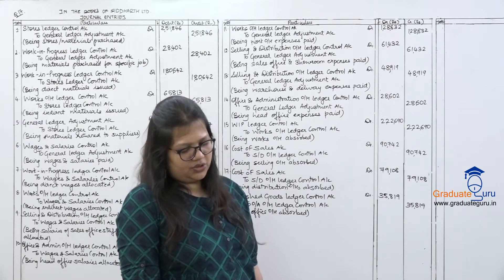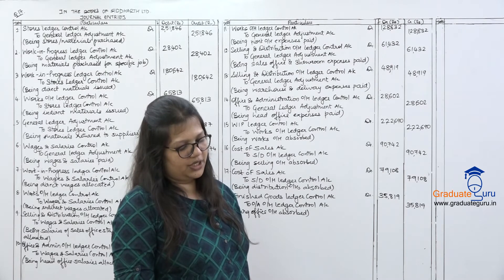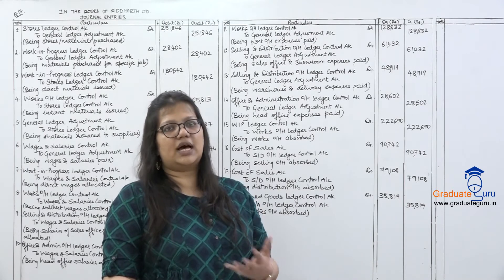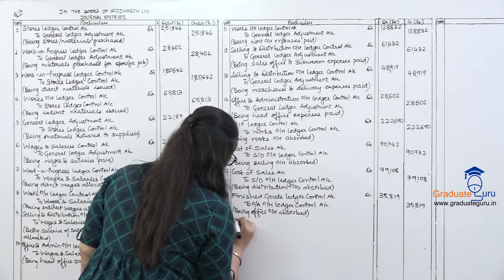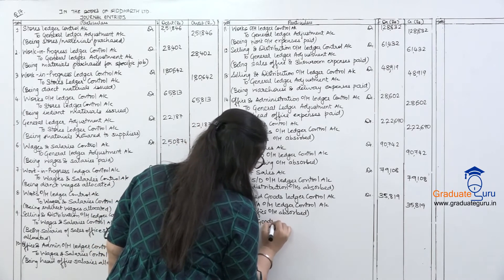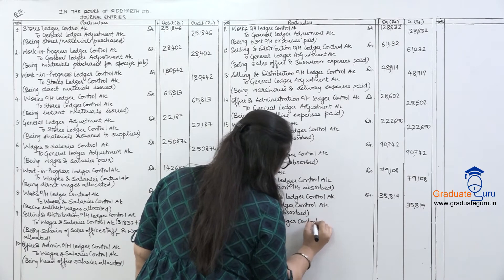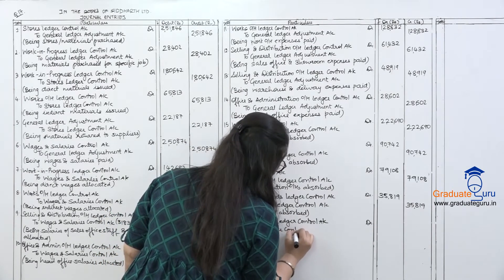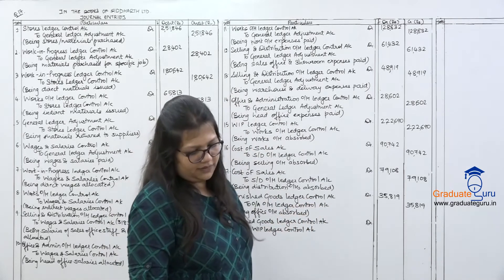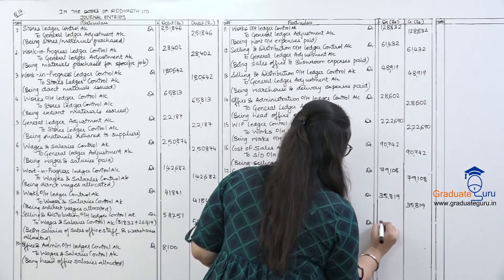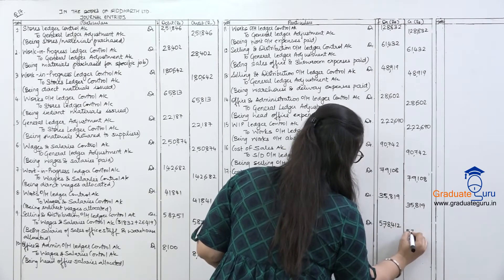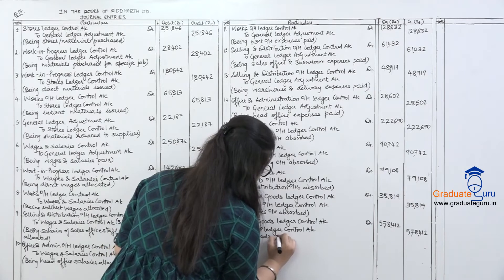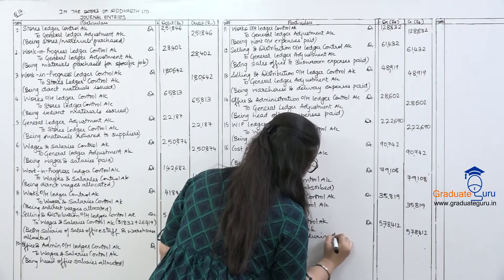Next, cost of goods produced during the year: once processing is complete, goods are transferred from WIP to Finished Goods. Journal entry: Finished Goods Ledger Control Account debit, to Work in Progress Ledger Control Account. Amount: 5,78,412. Narration: being goods produced during the year.